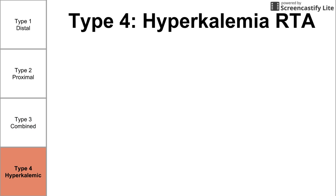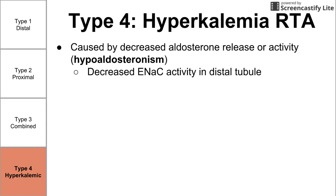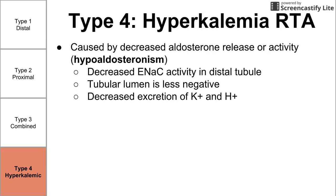Finally, we have hyperkalemic RTA, also referred to as type 4. This is caused by various things, all relating to decreased aldosterone release or activity — either you're not making enough aldosterone, not releasing it, or it's not able to act where it should in the distal convoluted tubule. Hypoaldosteronism causes decreased ENaC activity in the distal tubule. ENaC is the epithelial sodium channel on the apical membrane of the distal tubule, and decreased activity of this channel with low aldosterone results in the tubular lumen being less negative.